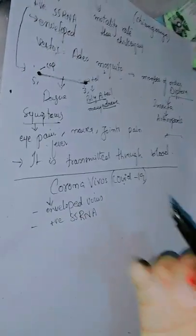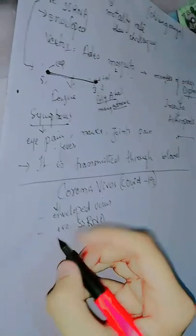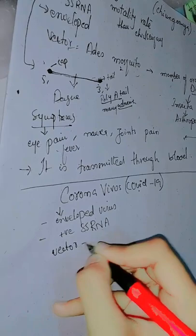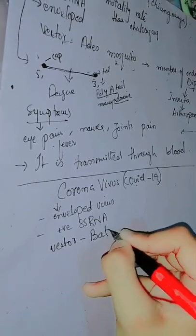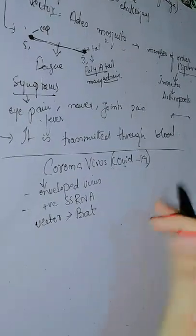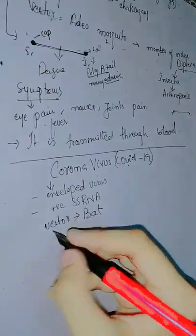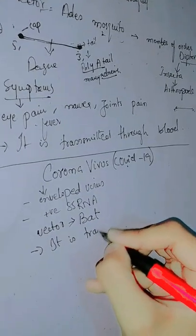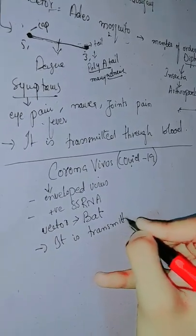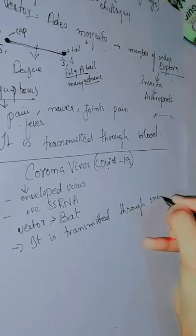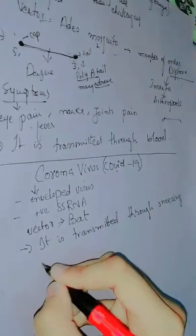The vector, which means carrier, of this coronavirus is bat. Bat is basically the vector or carrier that causes coronavirus. It is transmitted through sneezing and coughing.